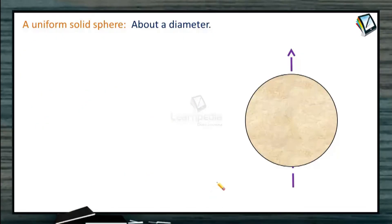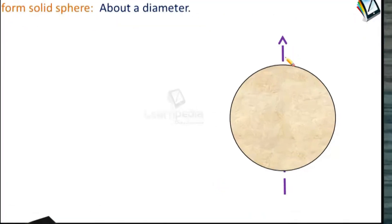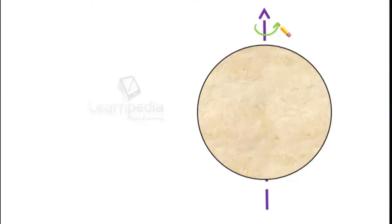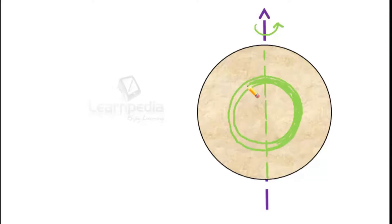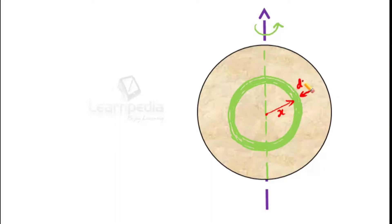Now let us calculate the moment of inertia of a uniform solid sphere about the diameter. Let us consider this is a uniform solid sphere rotating about the diameter as the axis. Since we know the moment of inertia of a hollow sphere about the diameter, we can cut this solid sphere into many many hollow spheres. One such hollow sphere is cut like this. By taking x from 0 to R, we can integrate over many many hollow spheres.